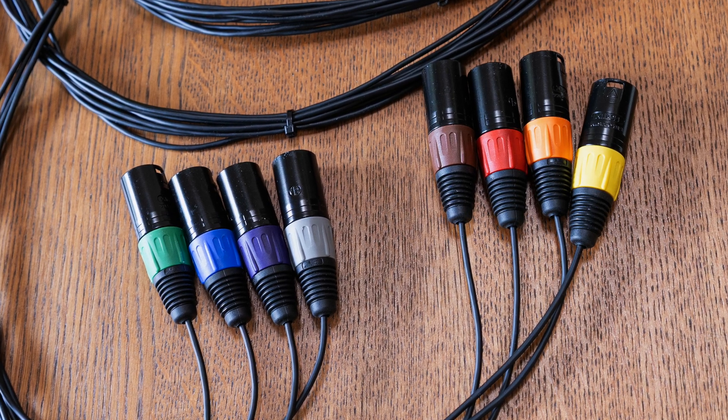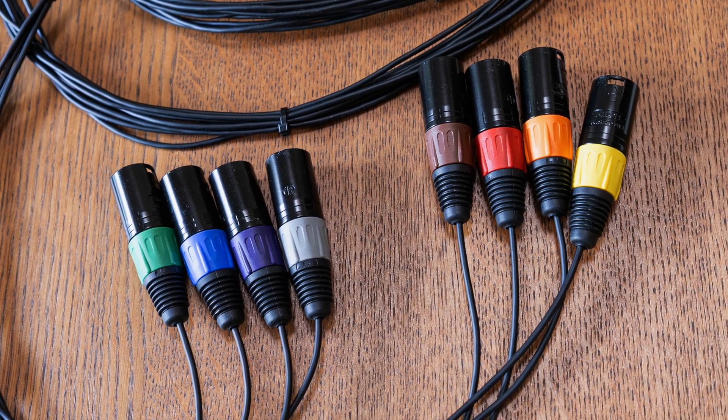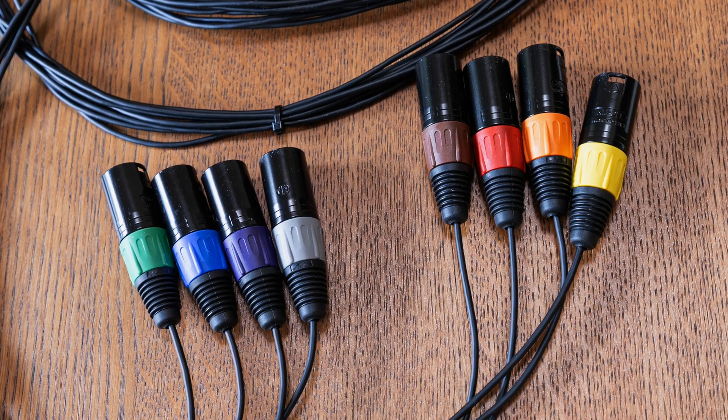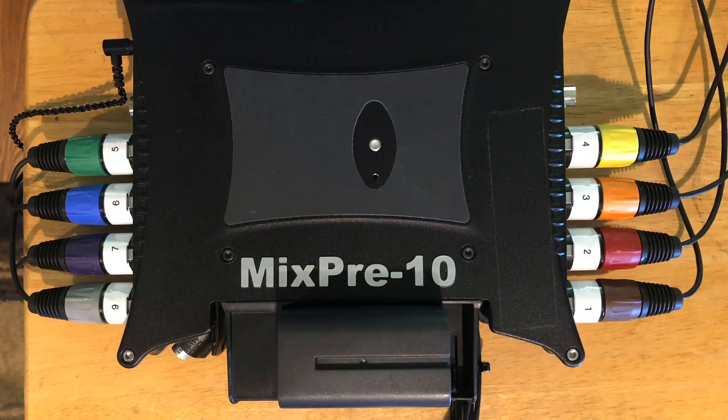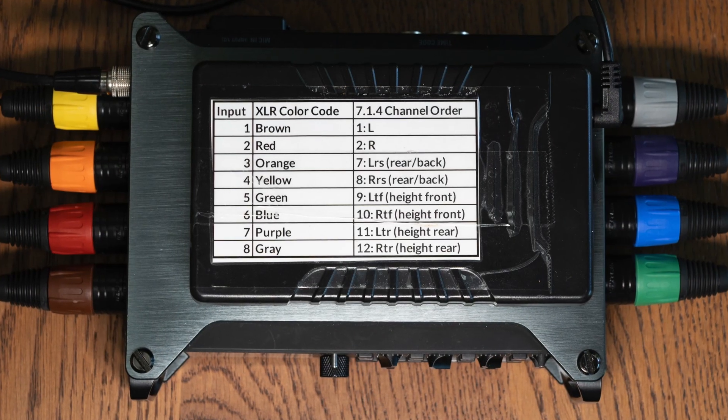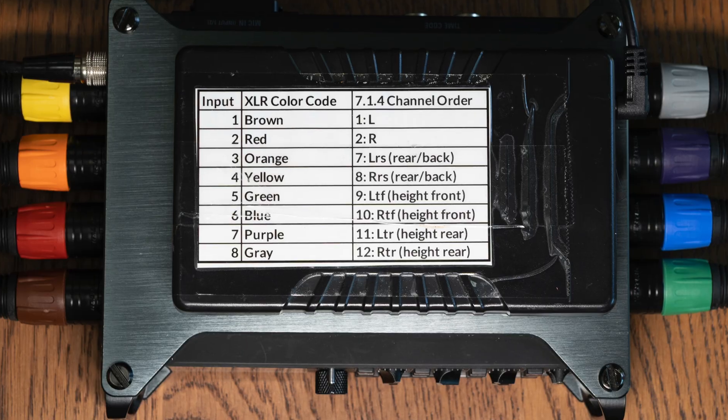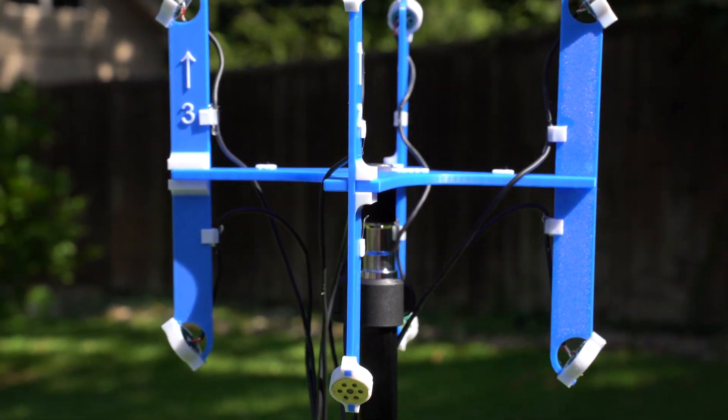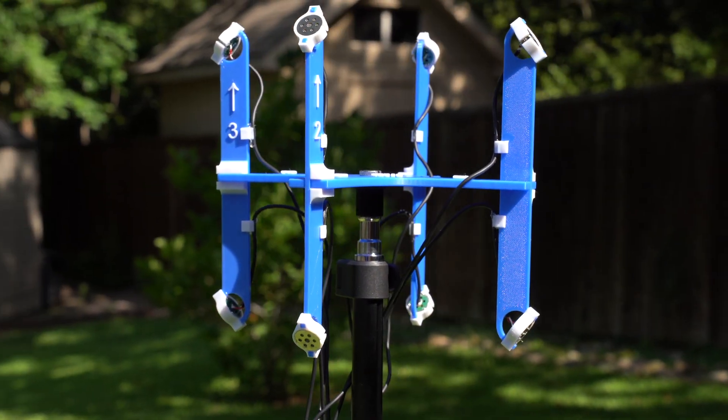Repeat this for inputs five through eight, which are green, blue, purple, and gray. This makes it super easy to connect the mic to a MixPre-10 or a Zoom F8n Pro. Congratulations! You just built an amazing immersive microphone. But wait! If you're going to do field recording, you'll want to add some wind protection and here's how to do that.